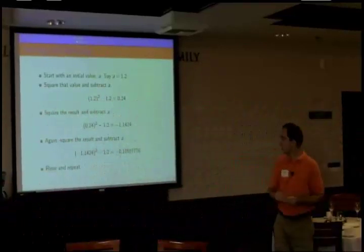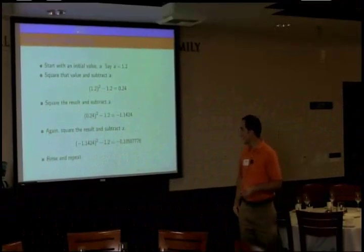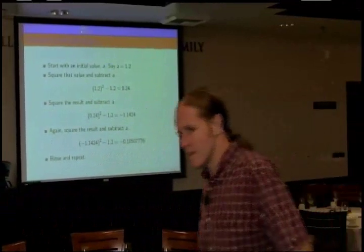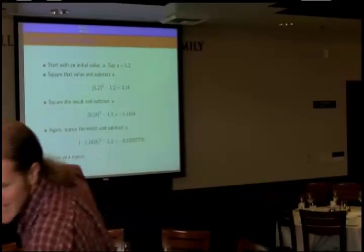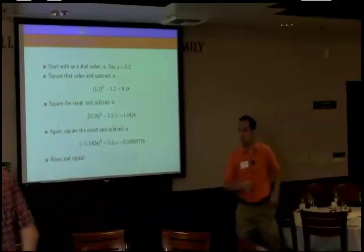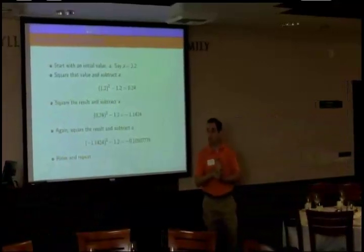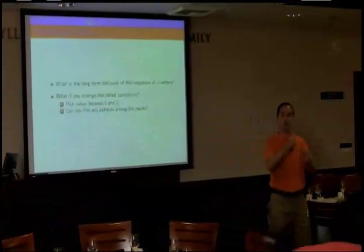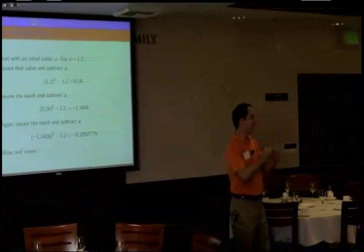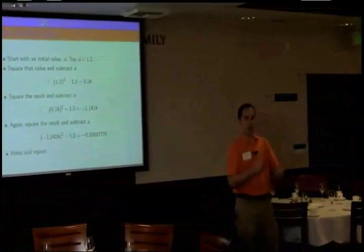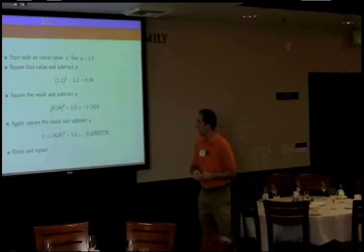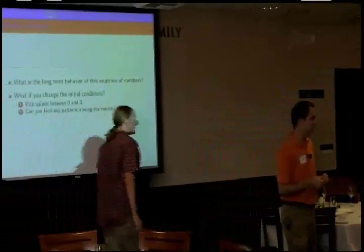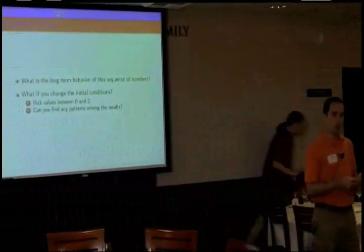So what we're going to do is open up Numbers on your spreadsheet. We set up the calculation for you — in class we would force students to make the spreadsheet do this computation itself, but we have it set up. We're going to start with an initial value of 1.2, then square it and subtract 1.2, then square the answer and subtract 1.2 again, repeatedly. You can see why a spreadsheet would be great for this — spreadsheets compute things and do the same thing over and over again.